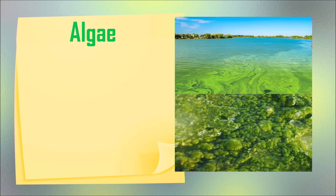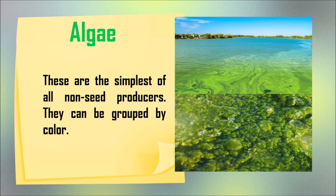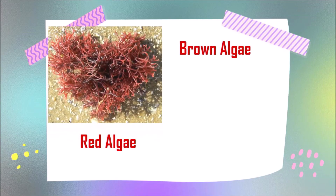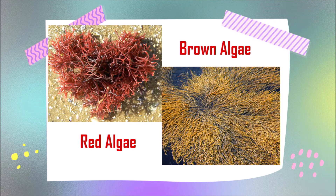The last one is algae. Algae are the simplest of all non-seed producers. They can be grouped by color. Blue-green algae can only be seen using a microscope and live in both fresh water and salt water. Green algae can grow one meter in length. Red algae and brown algae can be found in salt water. One type of algae is seaweed, which we can eat.